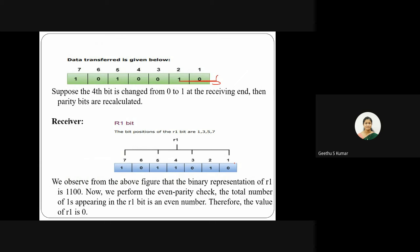At the receiver side, the Hamming code mechanism runs and the receiver recalculates the parity bits using the same process. The receiver knows the sender sent a 7-bit frame with 3 parity bits and 4 data bits, and that even parity was used. For r1, positions 1, 3, 5, and 7 are checked. Counting the ones gives 2, which is even, so the recalculated r1 equals 0.